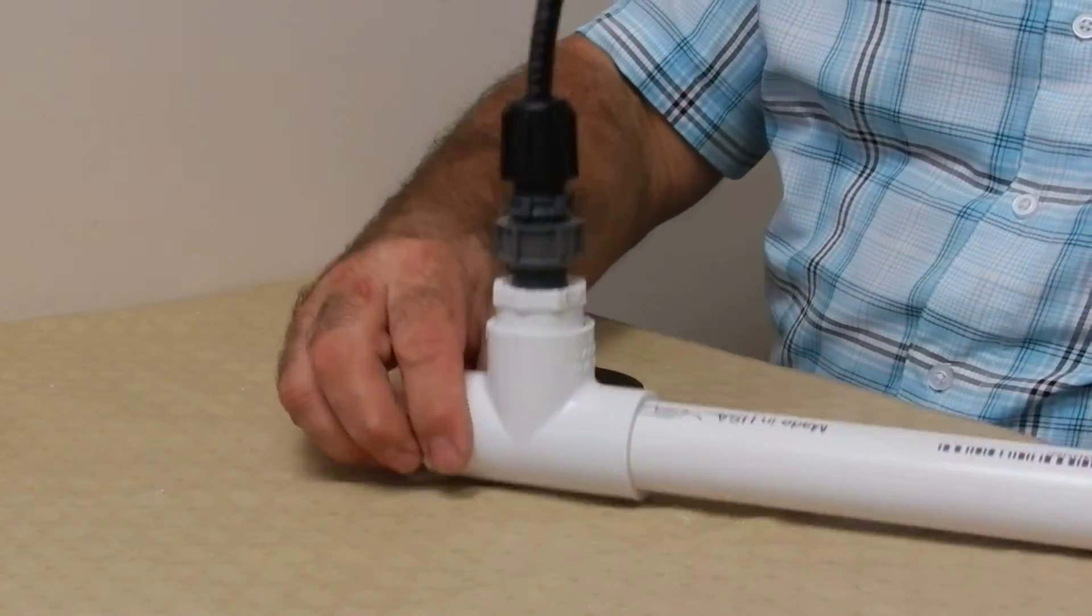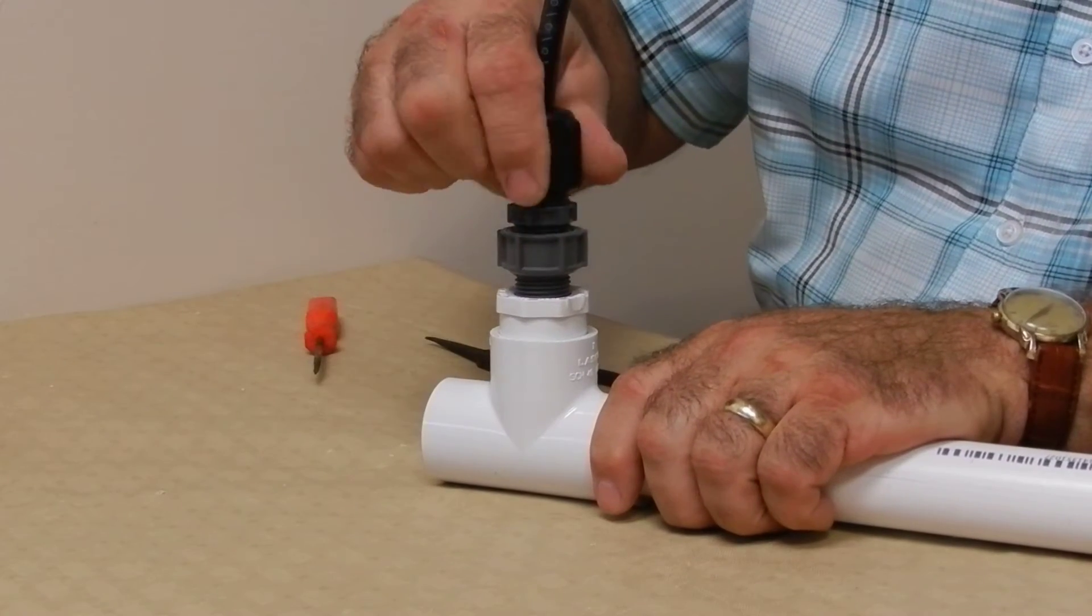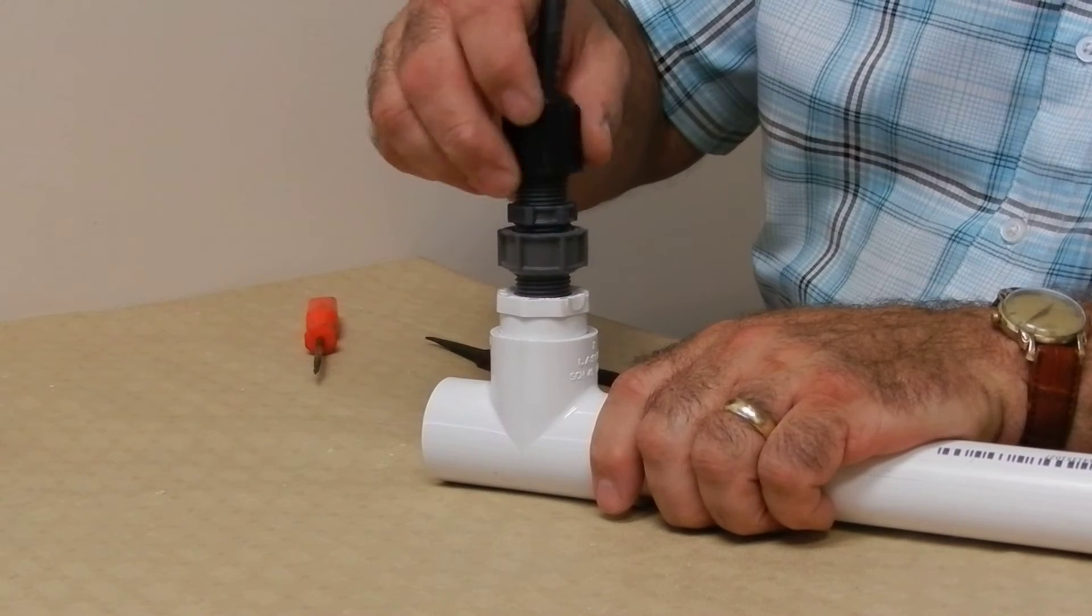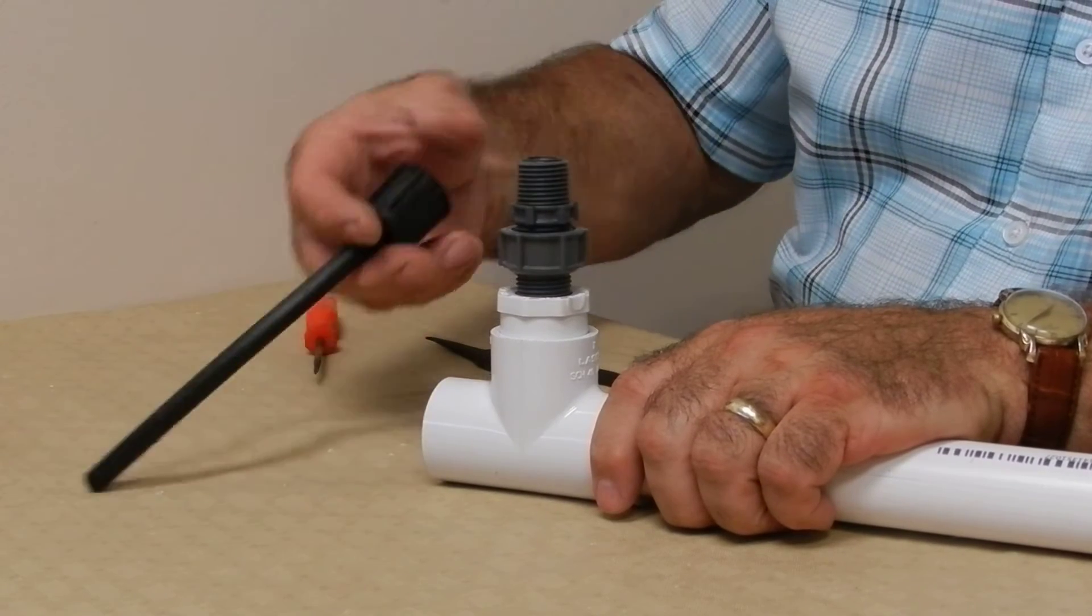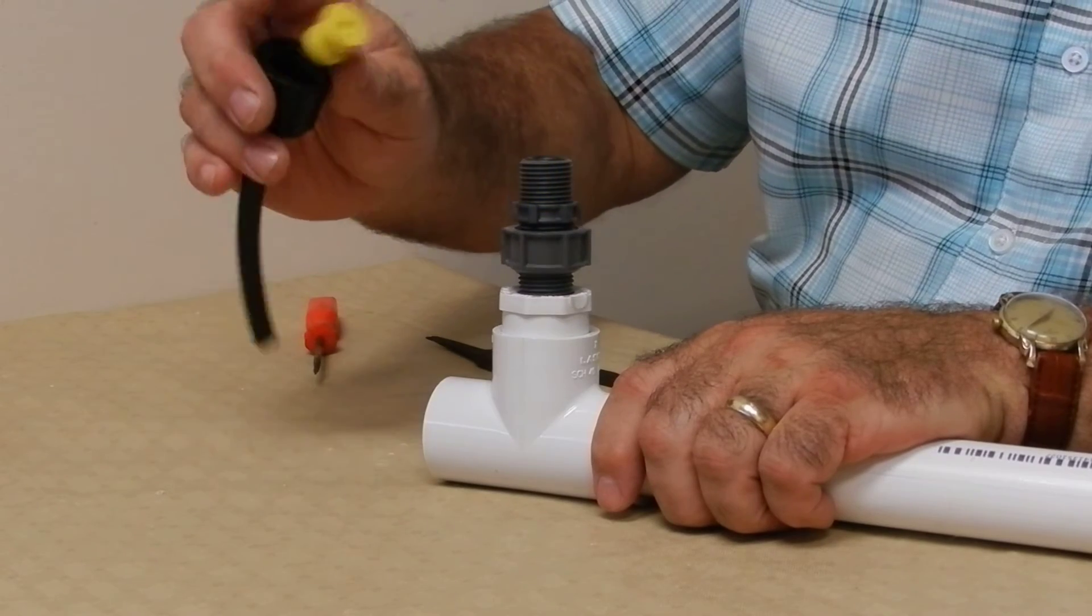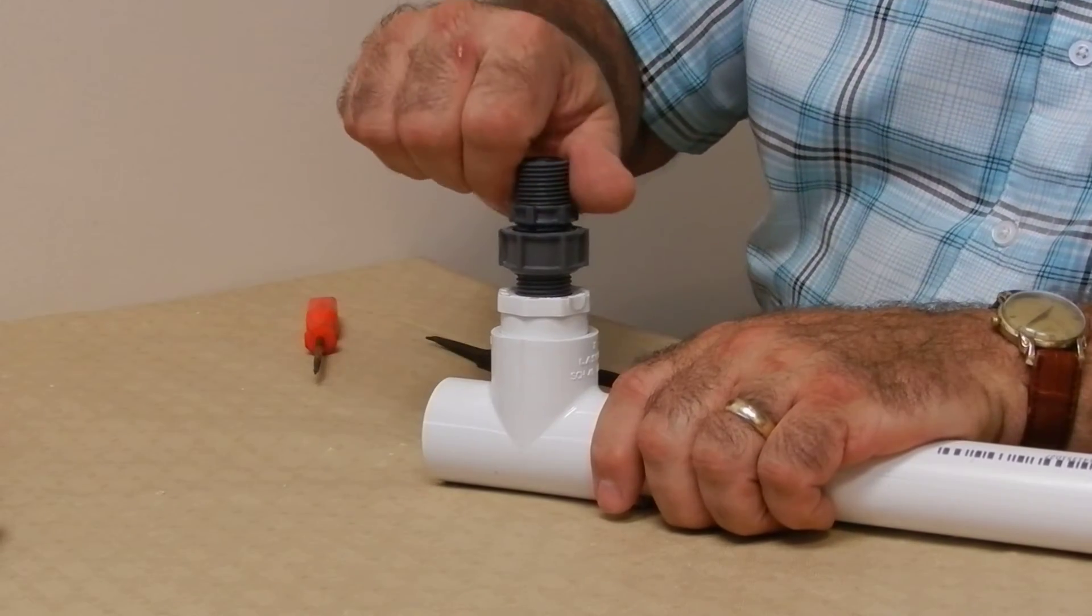The newer style injector looks like this. Remove the connector nut, make sure your two yellow pieces are still in place, lay the hose aside.